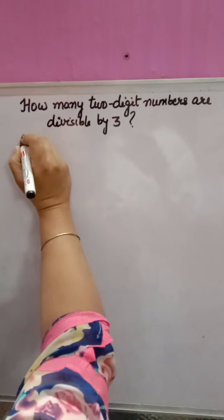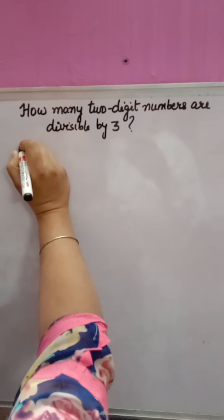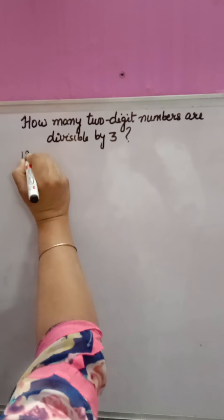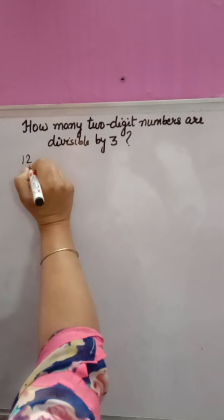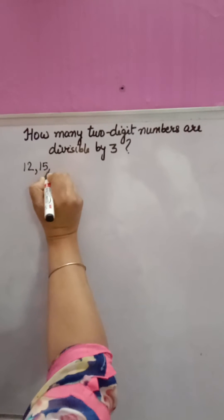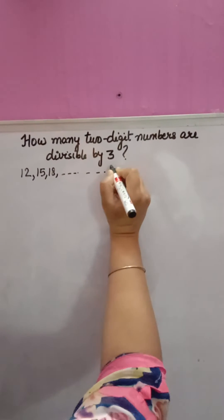The two-digit number 10 is not divisible by 3, and 11 is not either. The first two-digit number which comes in the 3 times table is 12, then 15, then 18. The last two-digit number divisible by 3 is 99.